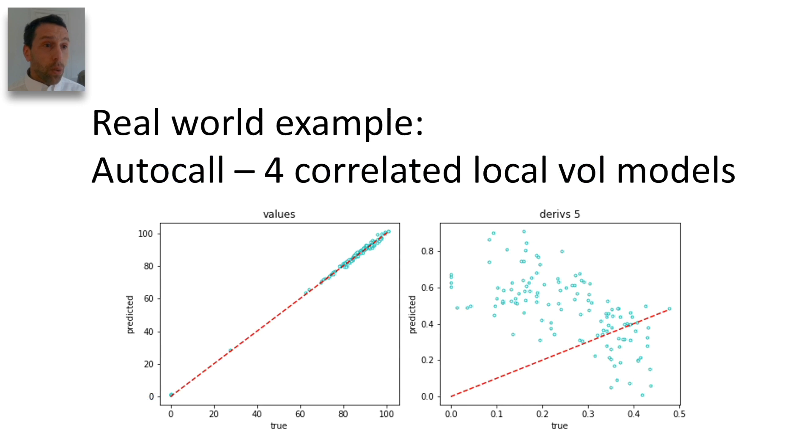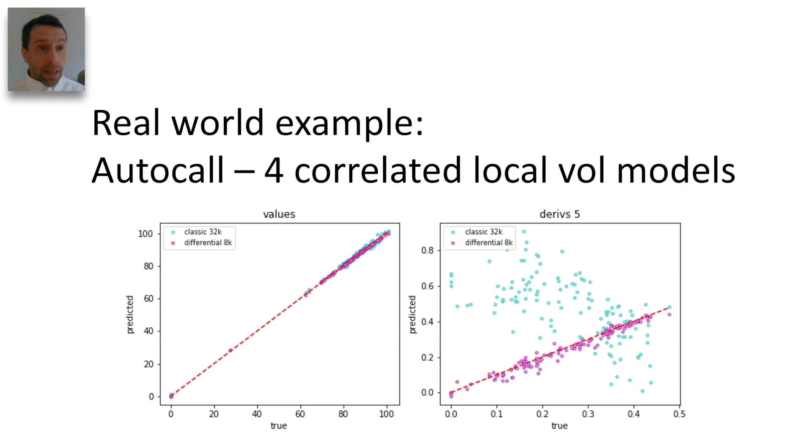The results seamlessly carry over to real-world situations. This is an autocall simulated with four correlated local volatility models, with a classical network trained on 32,000 examples, and a differential network trained on only 8,000 examples.